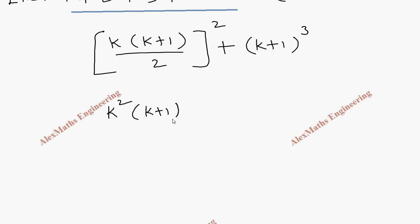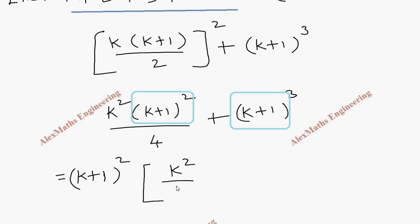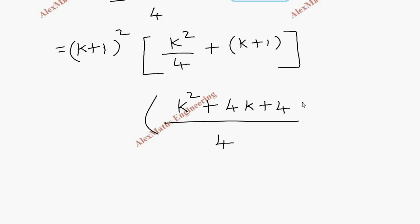We expand to get K squared times (K plus 1) whole square divided by 4, plus (K plus 1) whole cube. We find (K plus 1) whole square common from both terms. Taking it out, we get (K plus 1) whole square times the bracket: K squared over 4 plus (K plus 1), since we have taken the square term common leaving only K plus 1. Taking LCM, this becomes K squared plus 4K plus 4, all over 4.